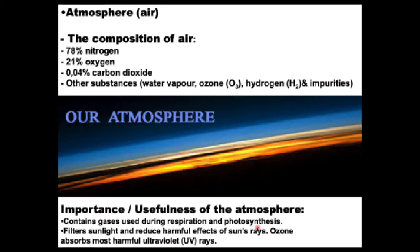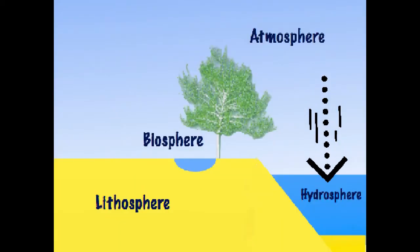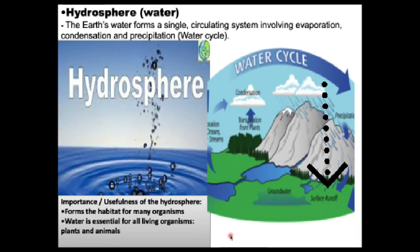This recycling ensures that the percentage and composition of gases remain constant in the atmosphere. The atmosphere also filters out sunlight and reduces the harmful effects of the sun's rays. The Earth's water forms a single circulating system involving evaporation, condensation, and precipitation — there is a continuous movement of water as it makes a circuit from the oceans to the atmosphere to the Earth and back again. We call that the water cycle.